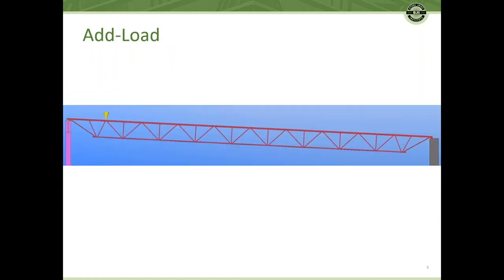Once the joist is designed for the specified uniform and concentrated loads, an add load is applied, which is a single concentrated load separately placed at each joist top cord panel point, generating load cases to determine the largest forces in each joist component. This includes both cords and all the webs.